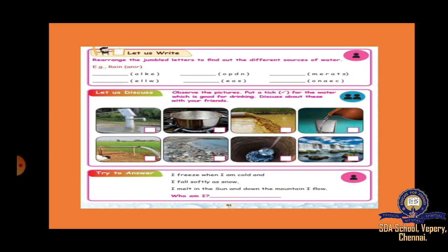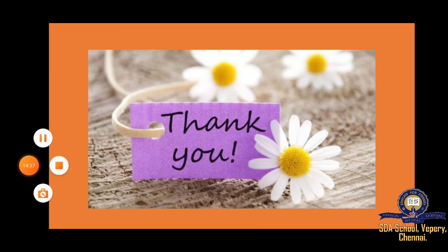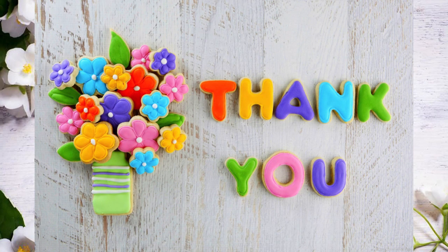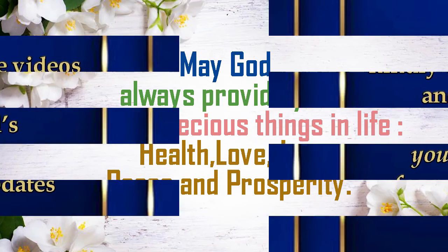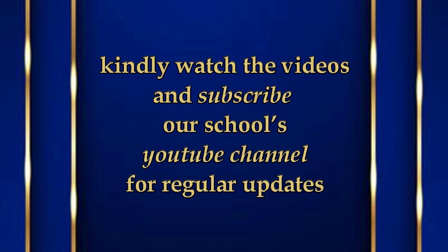Today's lesson is understood. First, we learned that we should not waste water. Second, we learned about sources of water. Third, we learned about potable water, that is drinking water. We also did a small experiment about water, and finally we have seen the assignments. Everything is very easy — try to do that and send me through WhatsApp. I hope you all understood. Thank you.